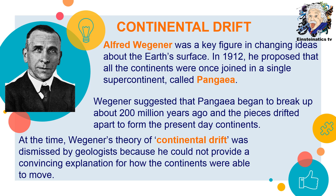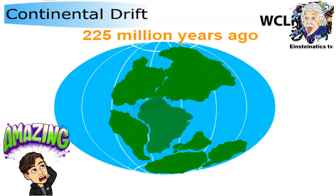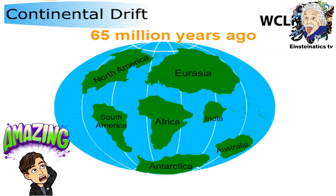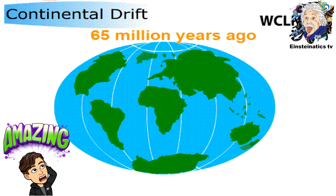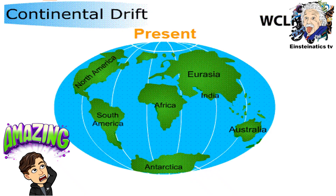Unfortunately, Wegener's theory of continental drift was dismissed by geologists because he could not provide a convincing explanation for how the continents were able to move. By the way, Pangea is a word which means "all Earth." Now we are going to explore what evidences Alfred Wegener proposed to support the theory of continental drift.